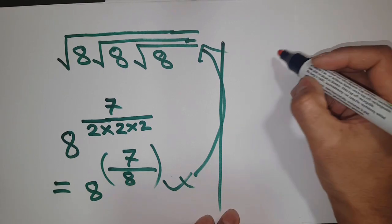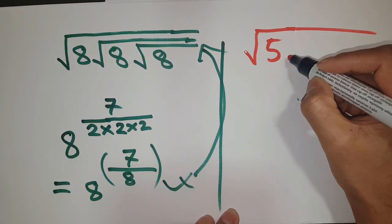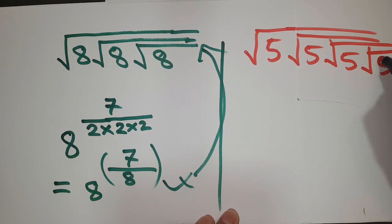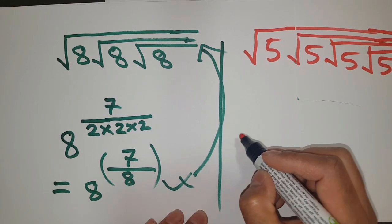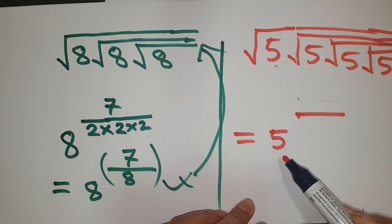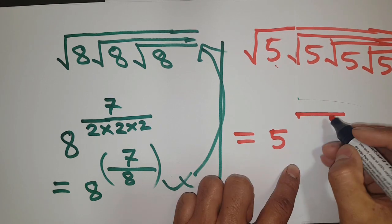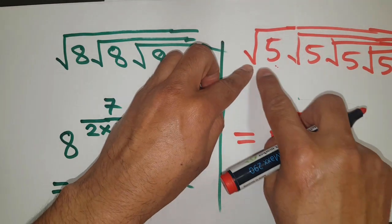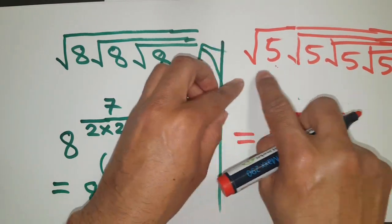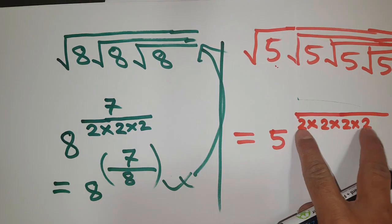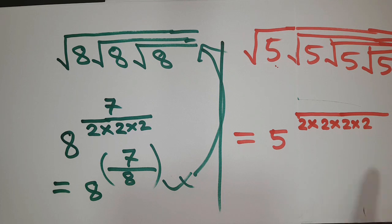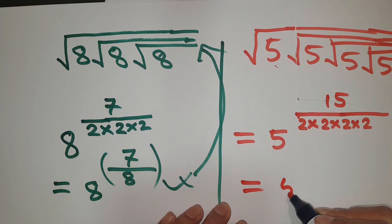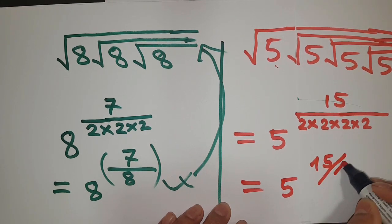Let's try another example: square root 5, square root 5, square root 5, square root 5 — and remember this is a finite series. The same approach applies: take the base 5, and find the denominator as 2 raised to the power equal to the number of square roots. We count 1, 2, 3, 4 square roots, so the denominator is 16. Then 16 minus 1 is 15, so the final answer is 5 to the power 15 over 16.